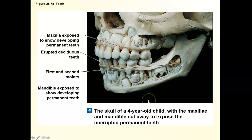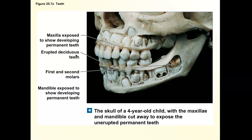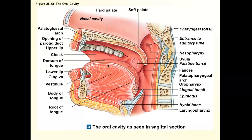We call our first set of teeth deciduous teeth — just like deciduous trees lose their leaves, we lose our first set of teeth. Our second set is developing in the bone and will eventually push out those baby teeth. The permanent adult teeth are our second and final set. In the oral cavity structures, the only new word is 'labia,' which means lips.